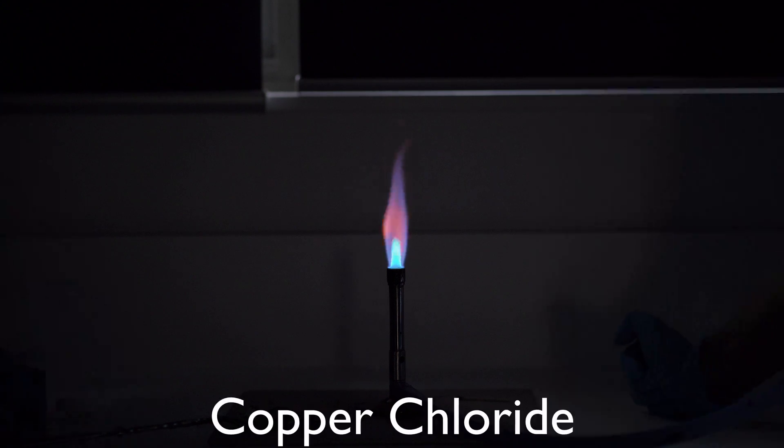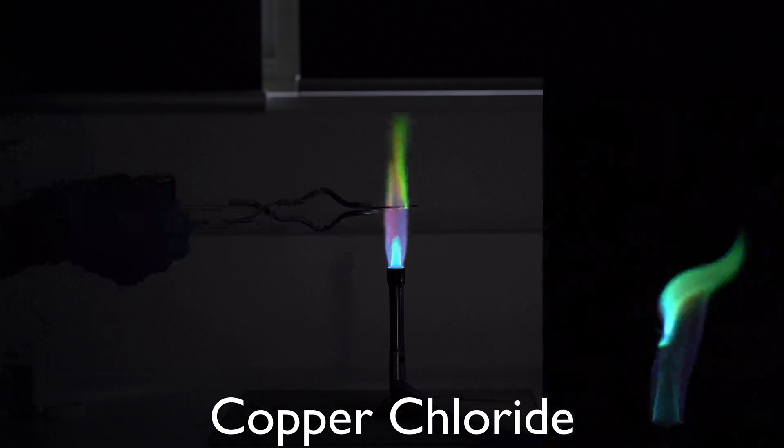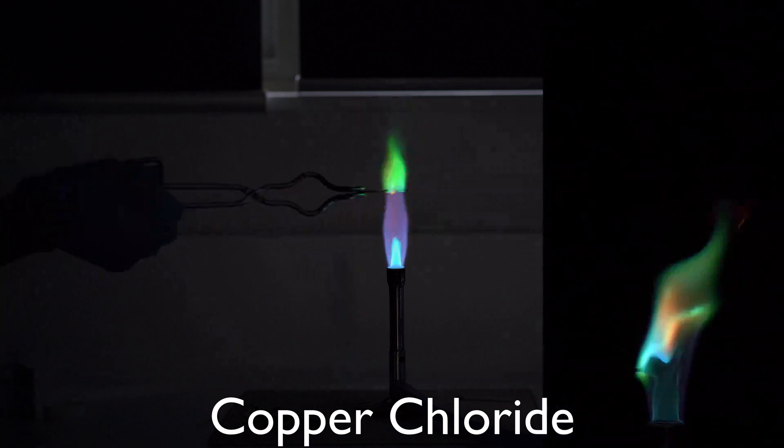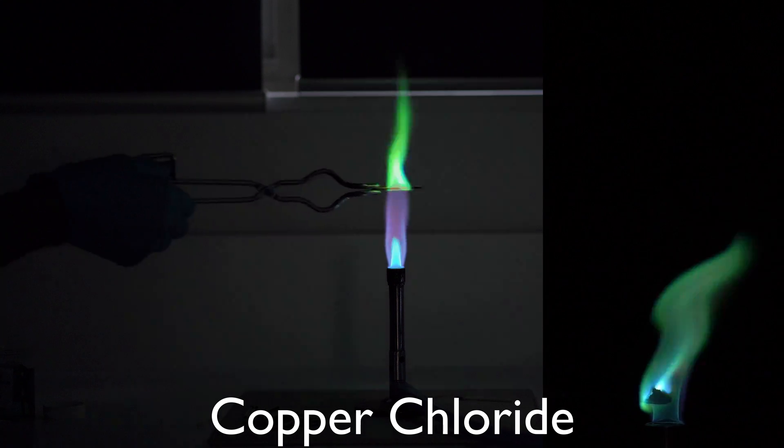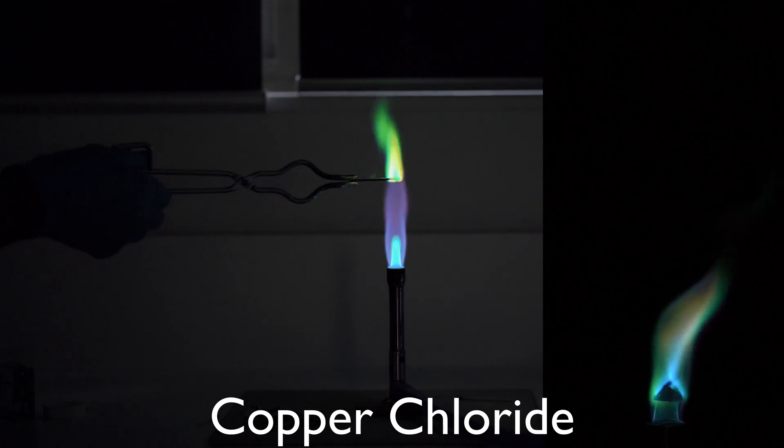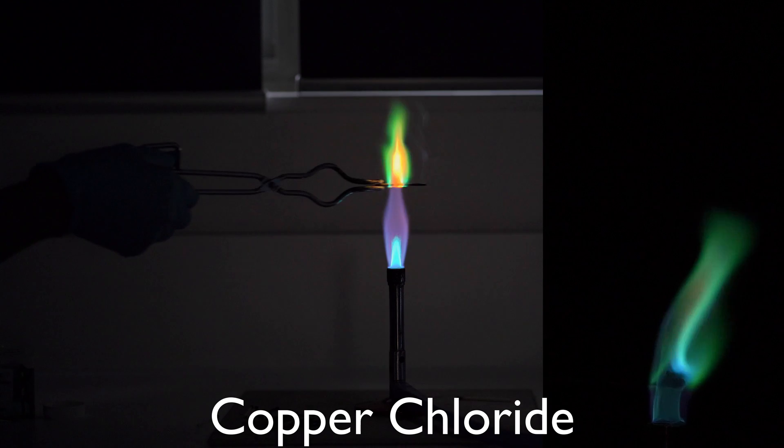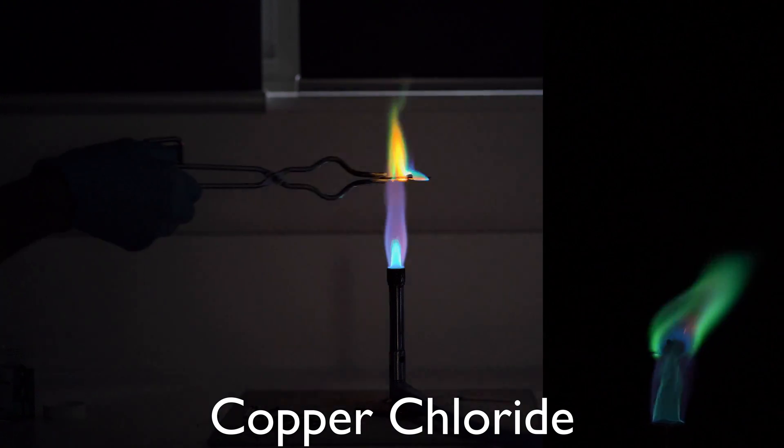Copper chloride. So this is copper metal, mainly at work here, giving us a color of our flame. Giving us a beautiful green, Harry Potter green color. And now it looks like we're just burning at this point here.